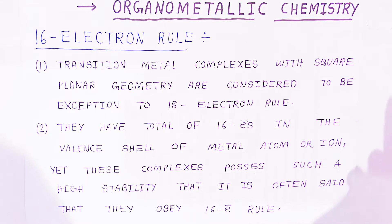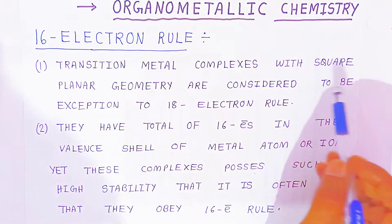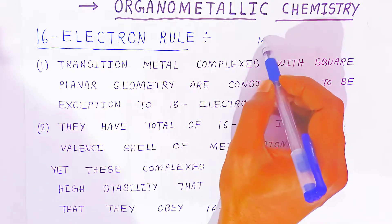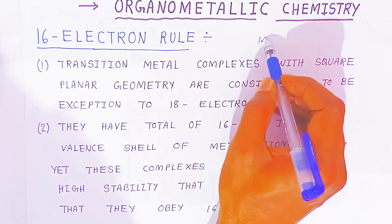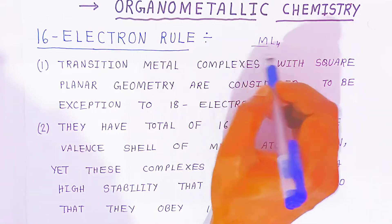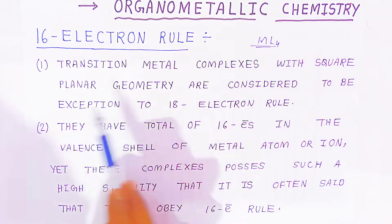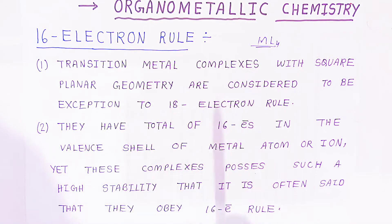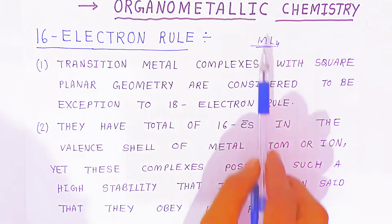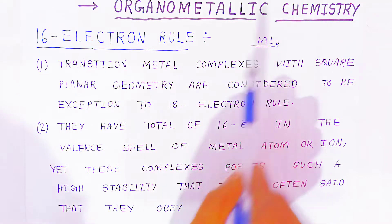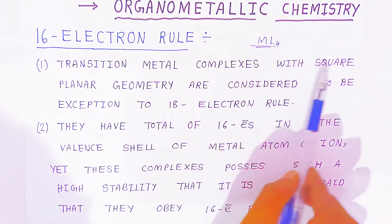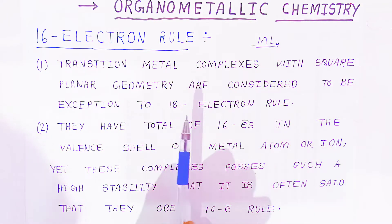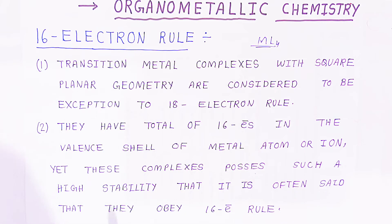When a metal complex has 4 ligands and the geometry is square planar, it is more stable. These complexes possess high stability — we can say they obey the 16 electron rule.